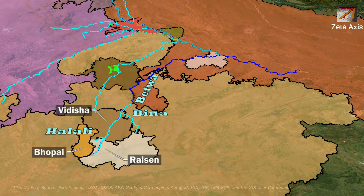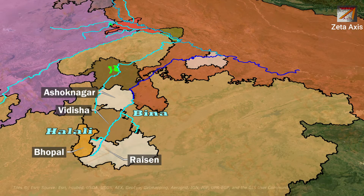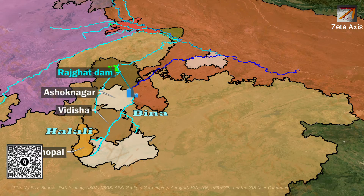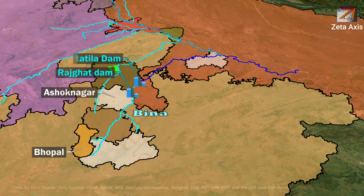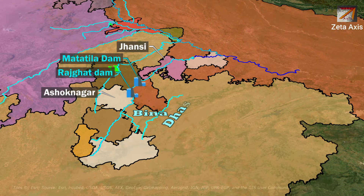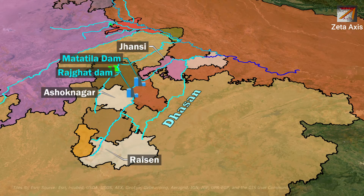After Vidisha, the Betwa river enters Ashoknagar where Rajghat Dam is built on the UP-MP border. Further north of Rajghat Dam, Matatila Dam is built on the Betwa river in Lalitpur, UP. The river flows through Jhansi, and on the border of Jhansi and Hamirpur, the Betwa river meets the Dhasan river, which originates from Raisen district. The Betwa river finally joins the Yamuna in Hamirpur.